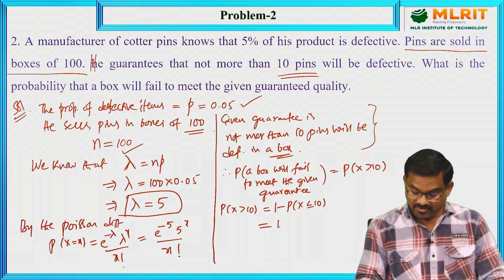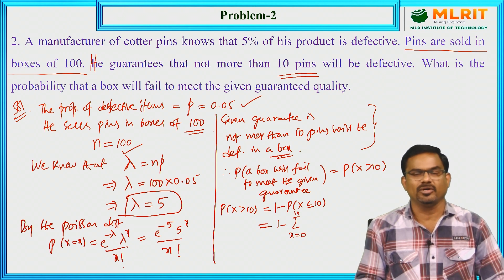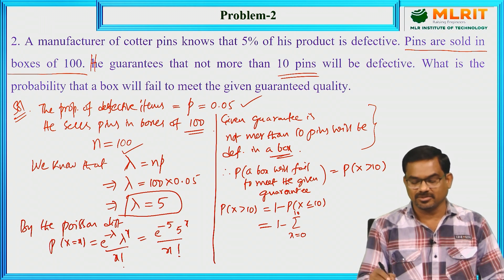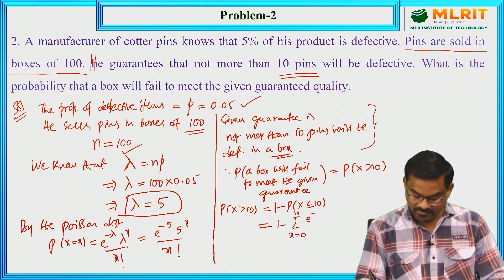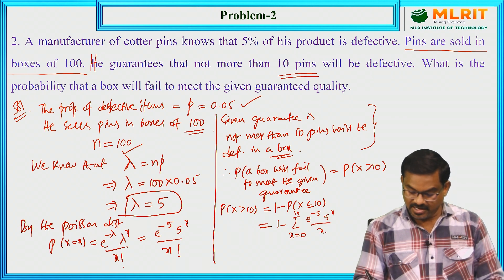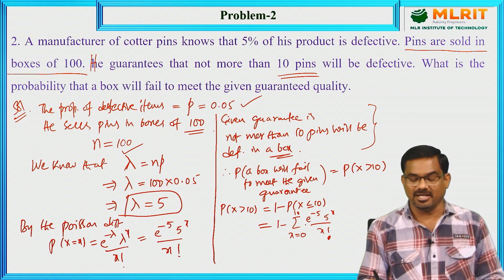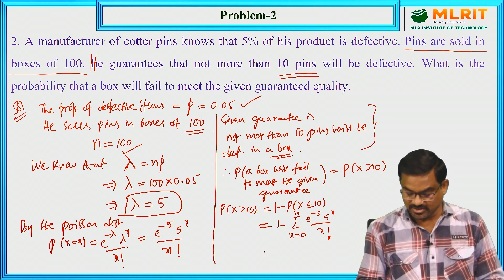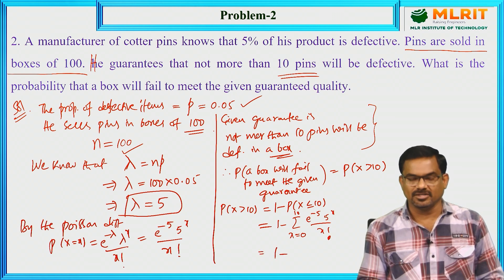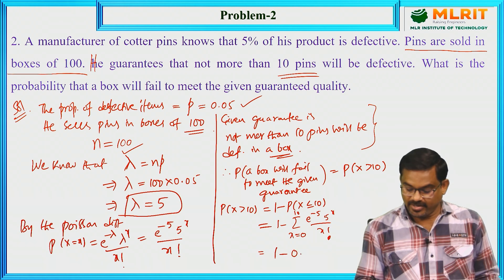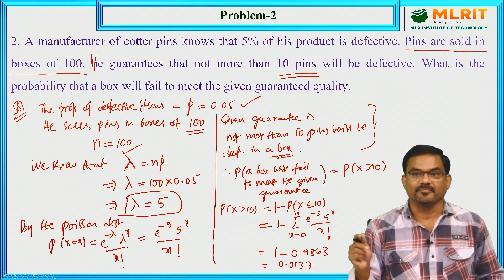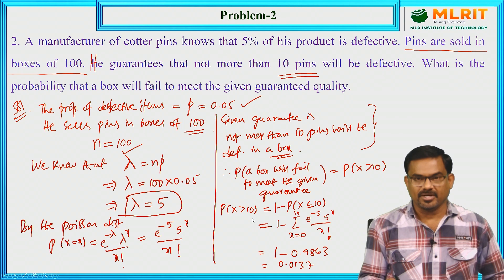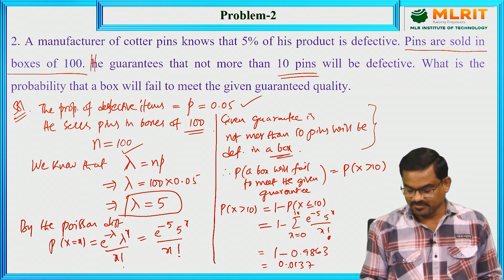So P(X > 10) = 1 − Σ(x=0 to 10) [e^(−5) · 5^x / x!]. This summation can be calculated using the Poisson distribution table. Using the table, this value equals 0.9863, so the final answer is 1 − 0.9863 = 0.0137. The probability that a particular box will violate the given guarantee is 0.0137.